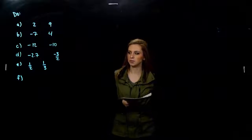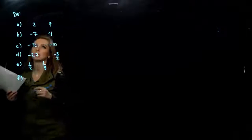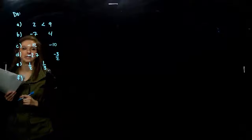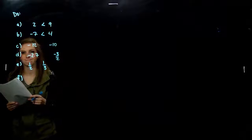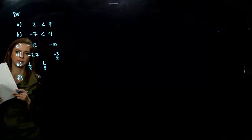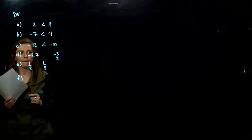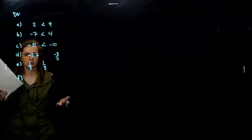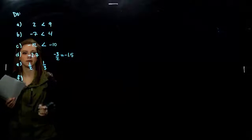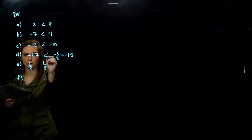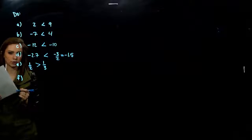Let's use those symbols to make these statements true. How is two related to nine? Two is to the left of nine on the number line, so two is less than nine. Negative seven to four — negative seven is to the left of four, so it's less than. For C, negative twelve is to the left of negative ten on the number line. For D, negative three halves as a decimal is really negative 1.5, so we need less than. And for E, one half and one third — one half is larger, so greater than.